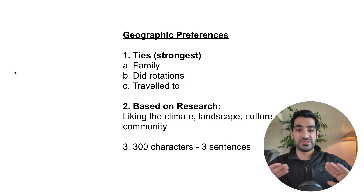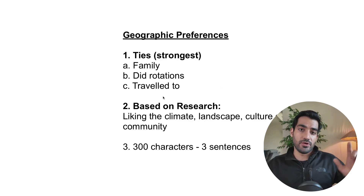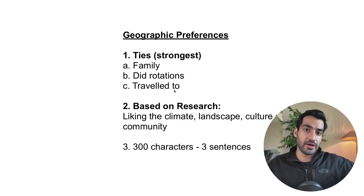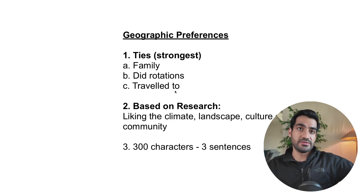The first way is you basically have ties to certain areas in the US based upon your family, where you did your rotations, and where you have traveled to. Based upon that, you input that into the signal, so it gives an aligned story of what you have done and where you want to go. If you have not come to the US, done any clinical rotations, or don't have family here, then the second way is to do it based upon research.